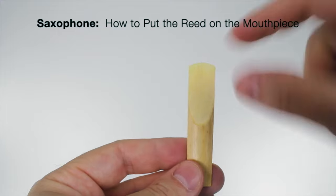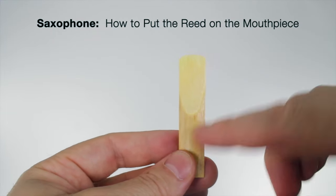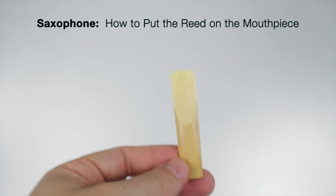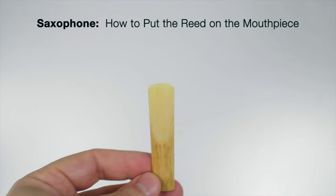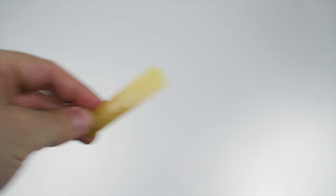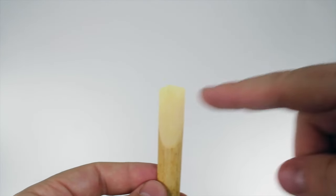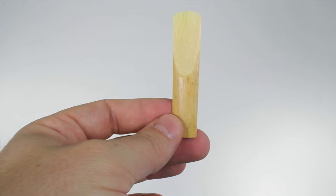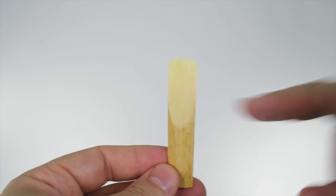Place the thin end of the reed in your mouth up to where the bark starts, leaving the tip sticking out. Hold it there while you put your instrument together. Don't put the entire reed in your mouth.